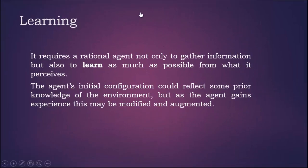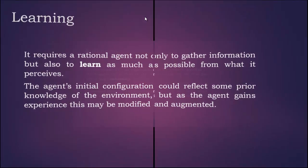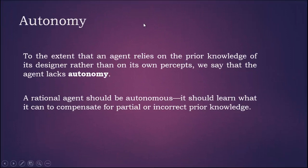Rationality requires an agent not only to gather information but also to learn as much as possible from what it perceives. The agent's initial configuration could reflect some prior knowledge of the environment, but as the agent gains experience, this may be modified and augmented. To the extent that an agent relies on the prior knowledge of its designer rather than its own percepts, we say the agent lacks autonomy. A rational agent should be autonomous — it should learn what it can to compensate for partial or incorrect prior knowledge.